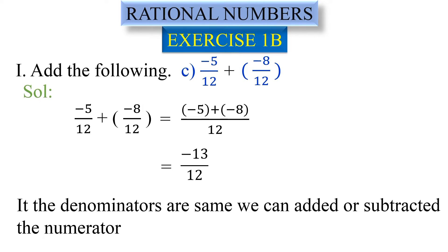So: minus 5 by 12 and minus 8 by 12. Since the denominators are the same, we add the numerators: minus 5 plus minus 8. Same sign, so we add — minus 5 minus 8 equals minus 13. The answer is minus 13 by 12.